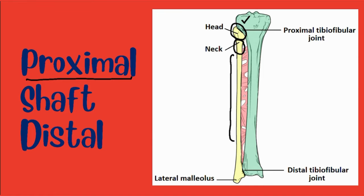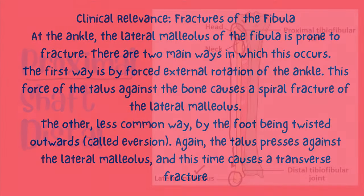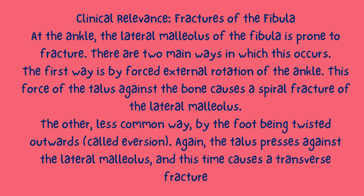For example, the anterior surface faces the anterior compartment of the leg. Distally, the lateral surface continues inferiorly and is called the lateral malleolus. The lateral malleolus is more prominent than the medial malleolus and can be palpated at the ankle on the lateral side of the leg.